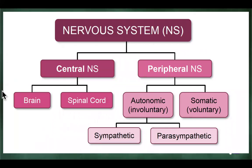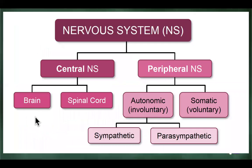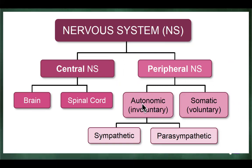Now let's look at the nervous system. Today we are going to spend time on the peripheral nervous system, which is subdivided into the autonomic and the somatic. The autonomic is involuntary — you cannot control it — and that is subdivided into the sympathetic and the parasympathetic. Auto means on its own, like automobile. The autonomic nervous system you have no control over; your somatic you do have control over.